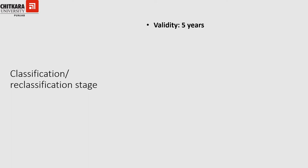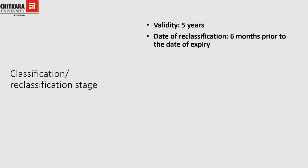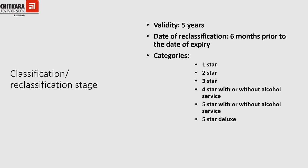Under the classification and reclassification stage, the validity is also five years. However, the validity will cease to exist six months prior to the existing validity, at which point the hotel must apply for reclassification. The categories here are one star, two star, three star, four star with or without alcohol service, five star with or without alcohol service, and five star deluxe — an additional category not present in the project approval stage.